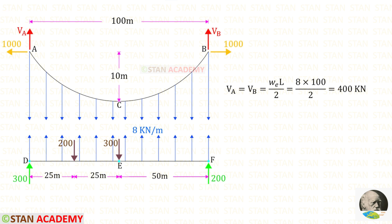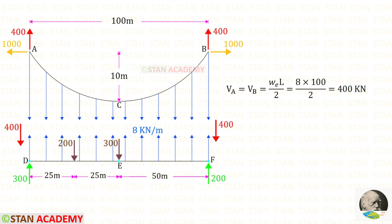Now in the cable, let us find the vertical reactions VA and VB. The formula is WE L upon 2. WE is 8 and L is 100. For VA and VB we will get 400 kilonewton. Due to this equivalent load, the vertical reactions in the cable are acting upwards, but in the girder the reactions will be acting downwards.